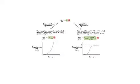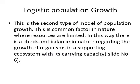Here two graphs are shown regarding exponential growth and logistic growth. In exponential growth a J-shaped curve is obtained, and in logistic growth an S-shaped or sigmoid-shaped curve or graph is obtained.